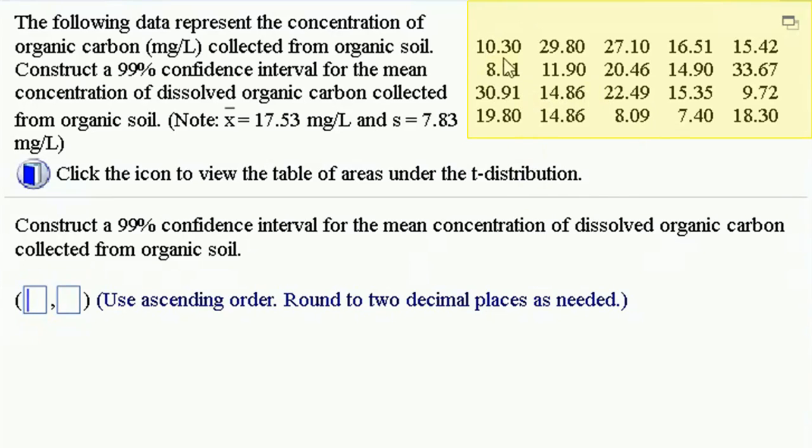We've got a sample size of 20 numbers coming from soil samples. We want to create a confidence interval at a 99% confidence level on the mean concentration of dissolved organic carbon collected from organic soil.